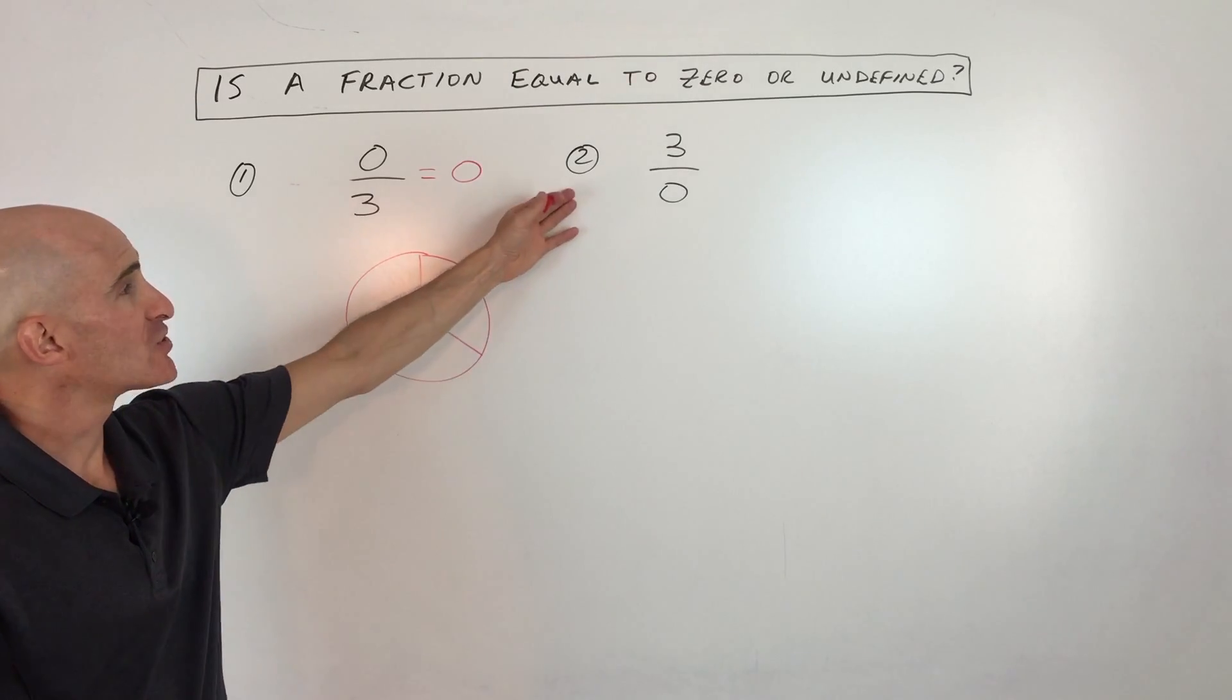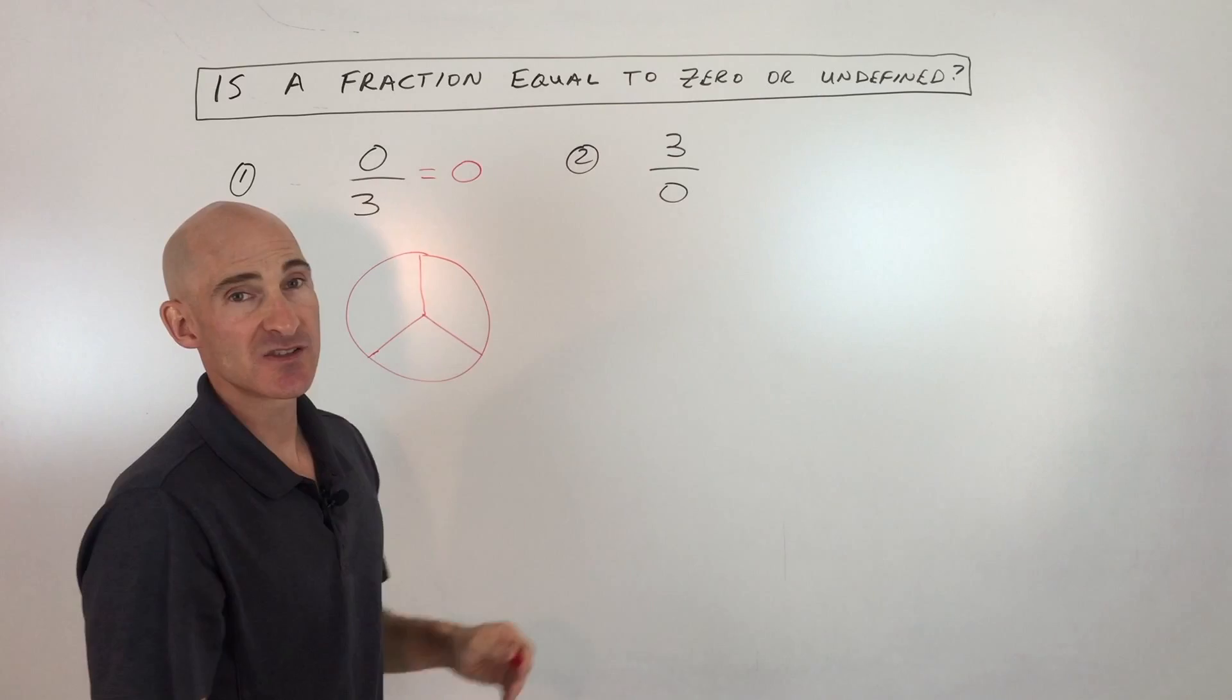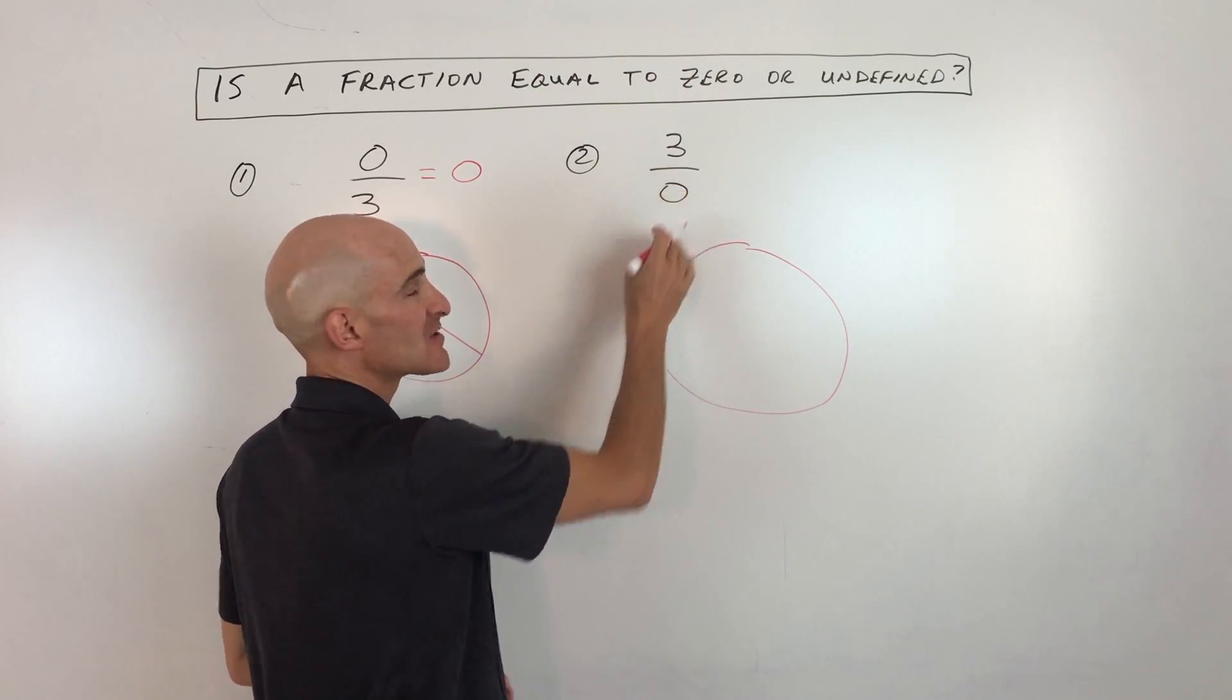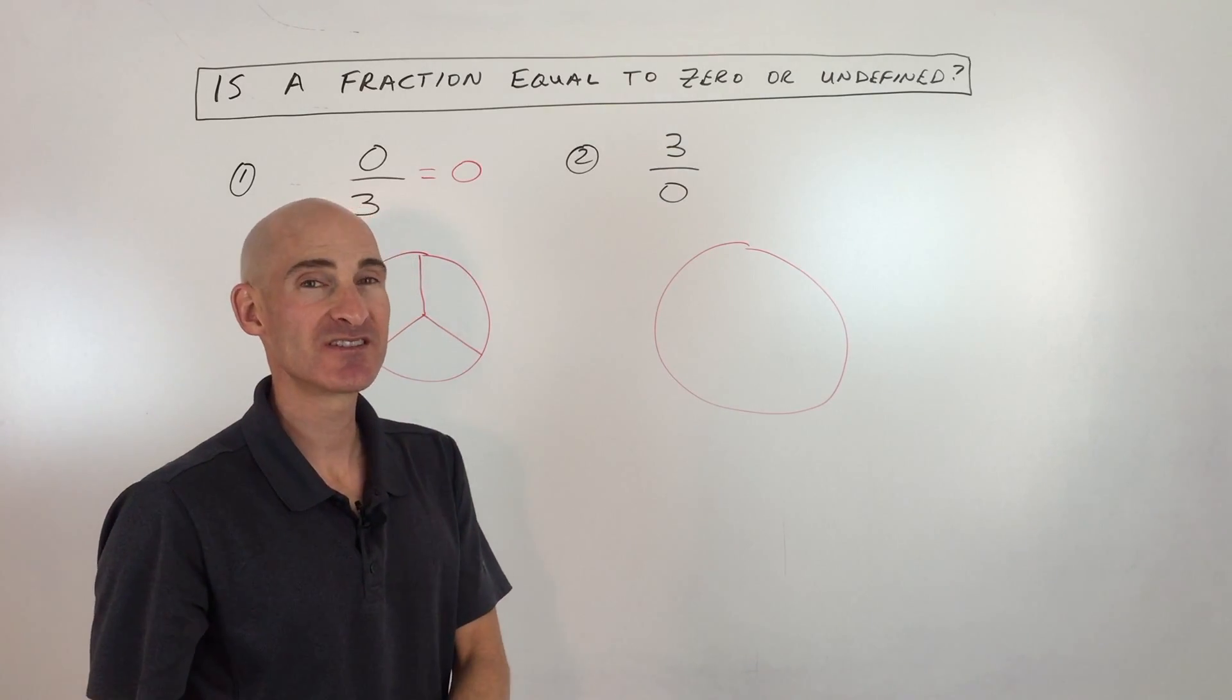Now if we go to number two, we've got three divided by zero. So we can go back to our pizza analogy and we could say, we're going to divide this pizza into zeroths.